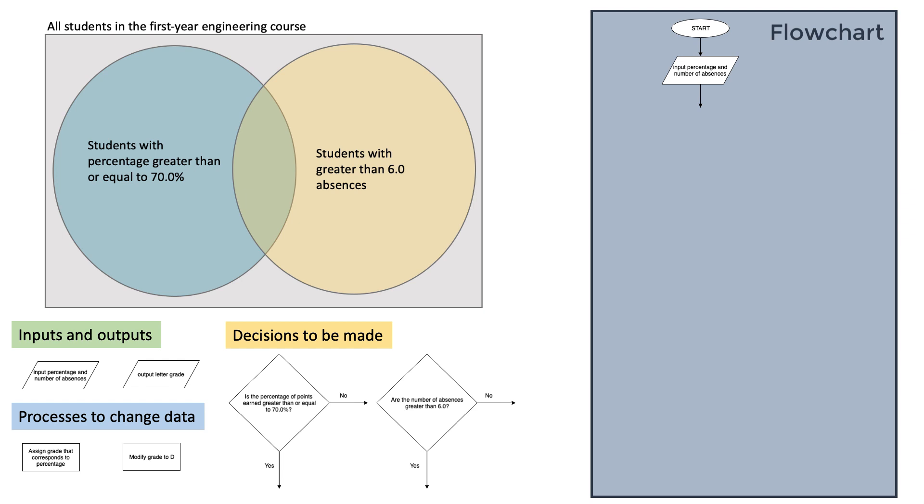Do the order of decisions to be made matter? In this case, no. It doesn't matter whether we consider the students with 70% or more first, or the students with greater than 6.0 absences. So I am going to put the percent decision first and the absence decision second. The only thing that matters here is that there must be a path for which the answer to both questions is yes at the same time. By putting the decision in sequence rather than parallel, and putting the second decision on the yes path of the first, we get a path that allows for both answers to be yes at the same time.